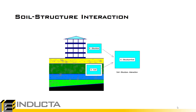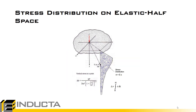To model this in the software, we use soil structure interaction. We have a stiffness matrix of the structure above, a stiffness matrix of the structure below, and we combine these matrices in the software to model the soil structure interaction.